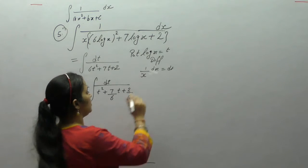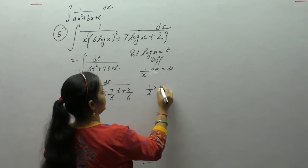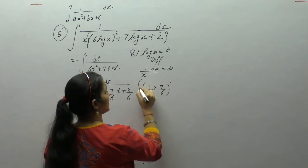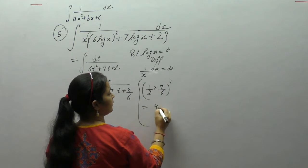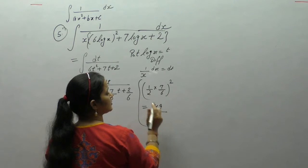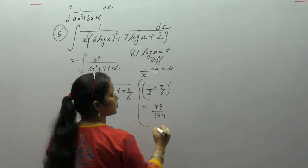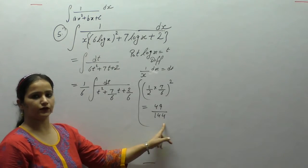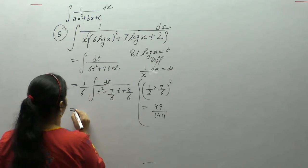Now, half the coefficient of t is 7/12, and (7/12)² = 49/144. We will add and subtract 49/144.